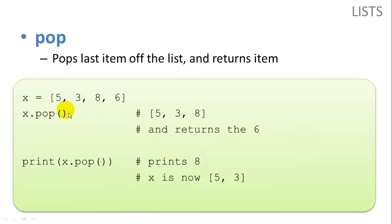The pop function pops the last item off of the list and returns it. So if we want to, let's say, print an item as we pop it off the list, we can say print x.pop and it will print the last item on the list. And the new list will have one less item in it.